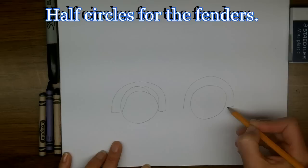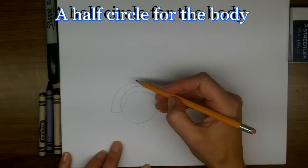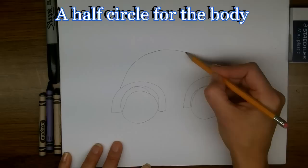Now we're going to draw the body of the car and we're going to start with our pencil quite close to the back of the back wheel. We're going to arch up over and end in the middle of the front fender.